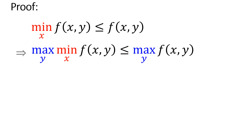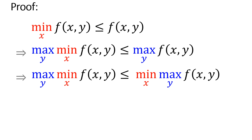Applying the max on both sides, the max of the min of the function is less than or equal to the max of the function. The left-hand side is less than or equal to the right-hand side, and in particular the left-hand side must also be less than or equal to the min of the right-hand side. This completes the proof of the minimax theorem.